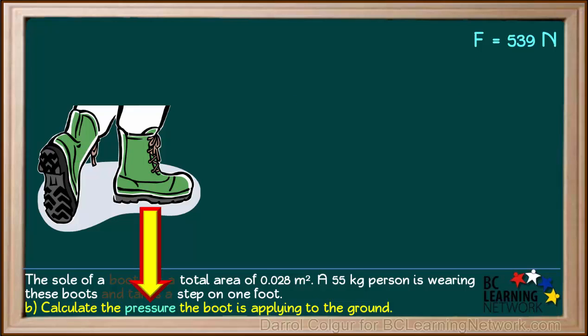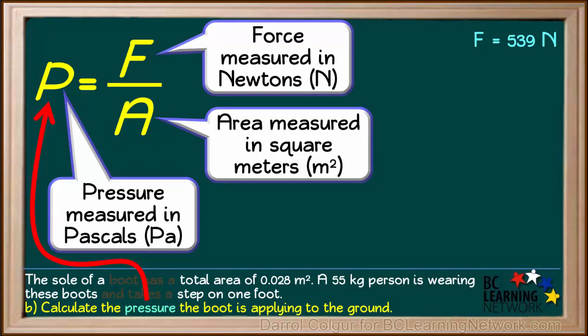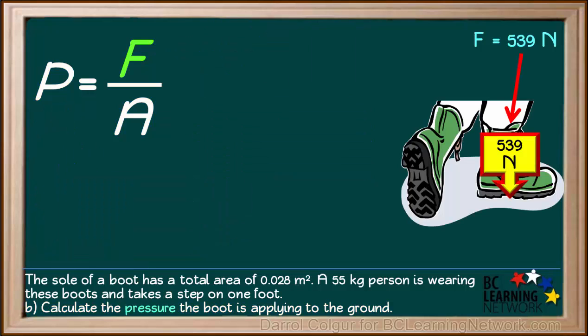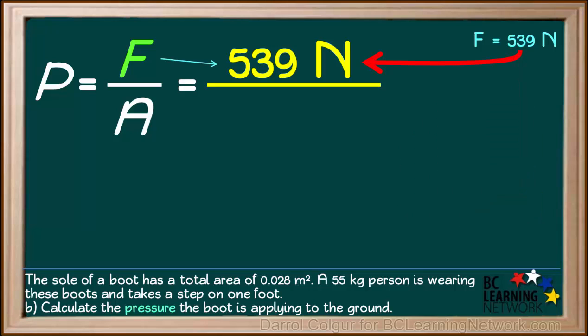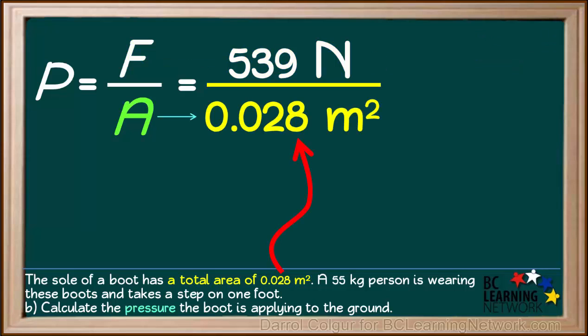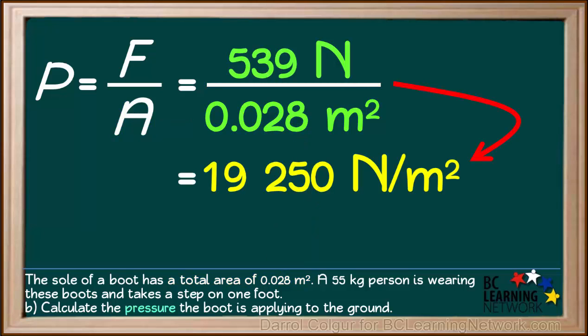Part B asks us to calculate the pressure the boot is applying to the ground as the person takes a step on one foot. The formula for pressure is: pressure in pascals equals force in newtons divided by area in square meters. When the person is stepping on one foot, all of her weight rests on that foot, so we substitute 539 newtons for force and 0.028 square meters for the area of the boot. 539 divided by 0.028 comes out to 19,250 newtons per square meter.